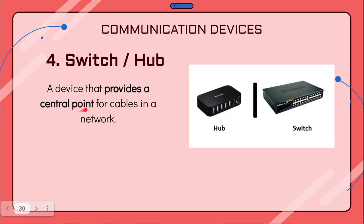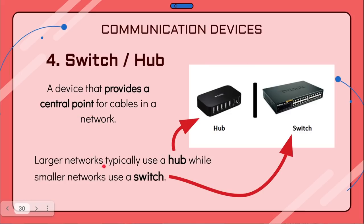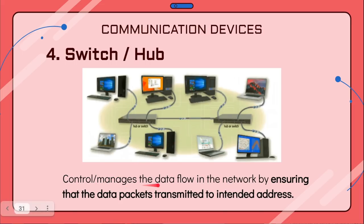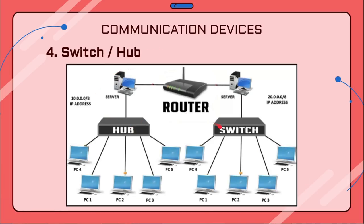A switch or hub is a device that provides a central point for cables in a network. Larger networks typically use a hub, while smaller networks use a switch, and a switch is more advanced than a hub. The diagram shows how a hub or switch becomes a central point connecting several devices in a network together while also connecting with other networks. Similar to a router, a switch or hub controls and manages data flow by ensuring data packets are transmitted to their intended address only.